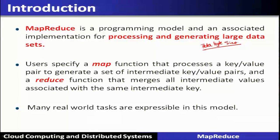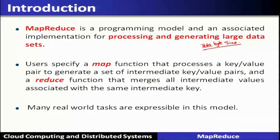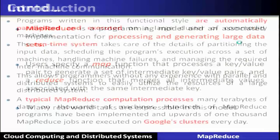In this simple programming model, users have to specify a function called Map that processes key-value pairs to generate a set of intermediate key-value pairs, which in turn will be taken up by another function called Reduce that merges all intermediate values associated with the same intermediate keys. Together, Map and Reduce work to solve many real-world applications, and many real-world tasks are expressible in this model.